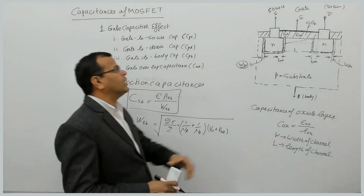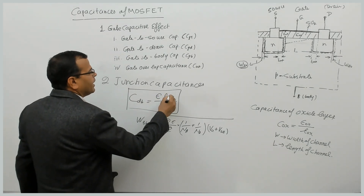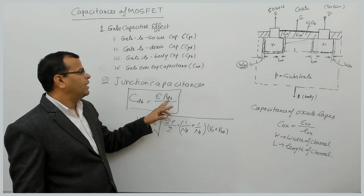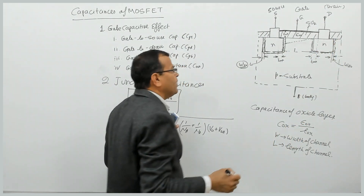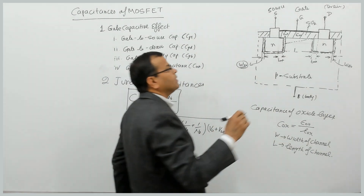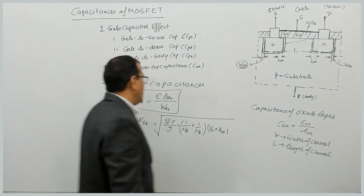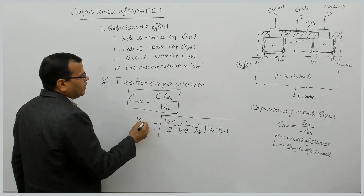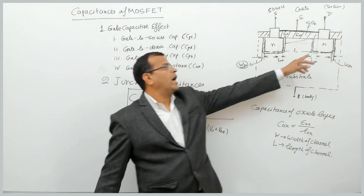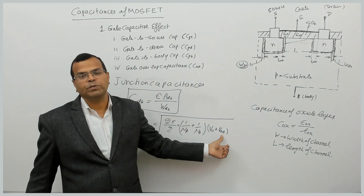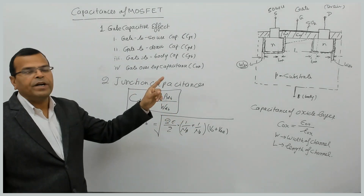Similarly, there is a junction between drain and body, which offers a capacitance C_DB. The area of contact between drain and body is A_DB, and W_DB is the width of the depletion layer between drain and body. The expression for W_DB is similar to the source-body case, substituting the built-in potential at the drain-body junction and V_DB, which is the reverse biasing voltage between the drain terminal and the body terminal.